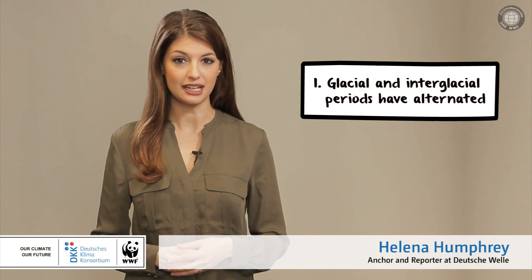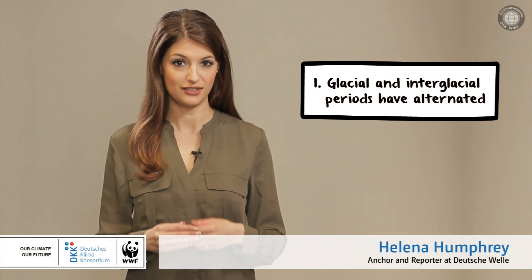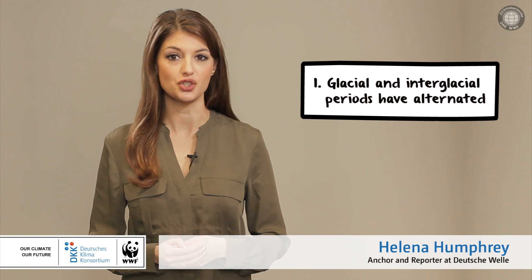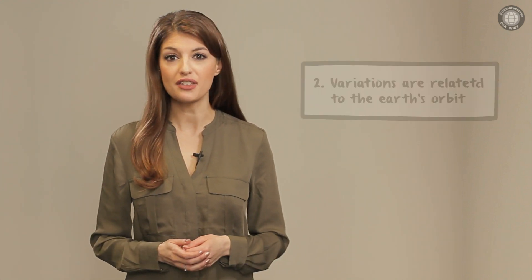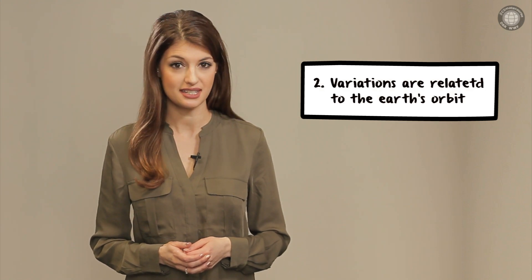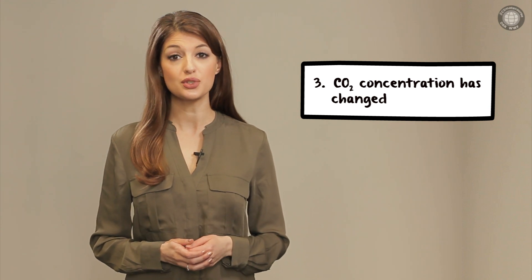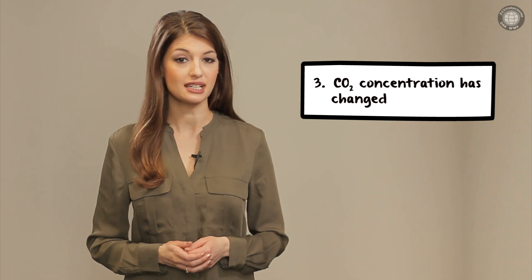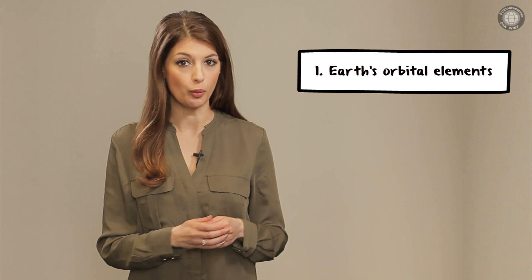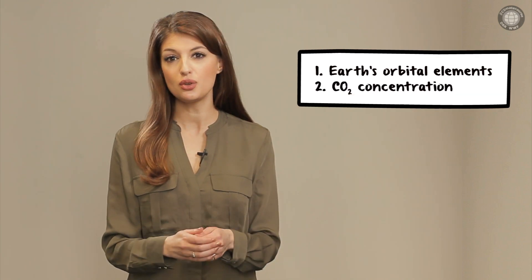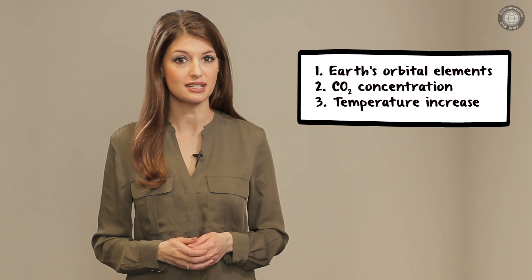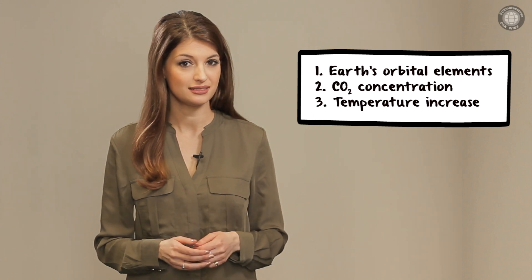You've seen that glacial and interglacial periods have alternated for tens of thousands of years in geological history — a completely normal occurrence. You've also learned that these variations are related to the Earth's orbit around the Sun. And you've seen that the CO2 concentration has also repeatedly changed during these glacial and interglacial periods. If you consider these three parameters, you'll realise that the Earth's orbital elements, CO2 concentration and temperature increase are somehow connected. But how?